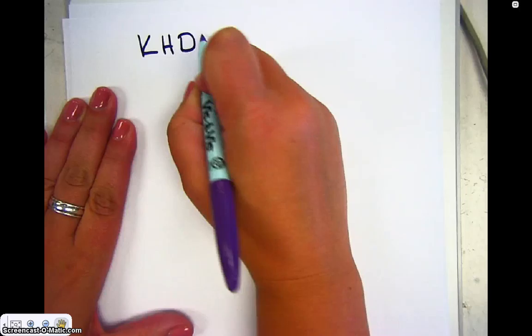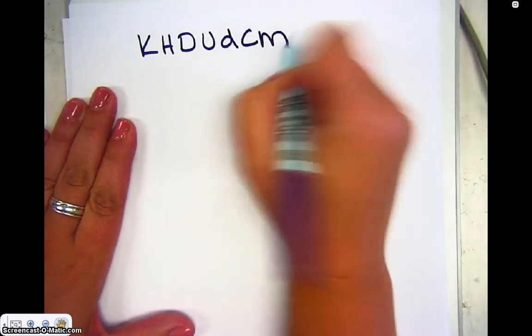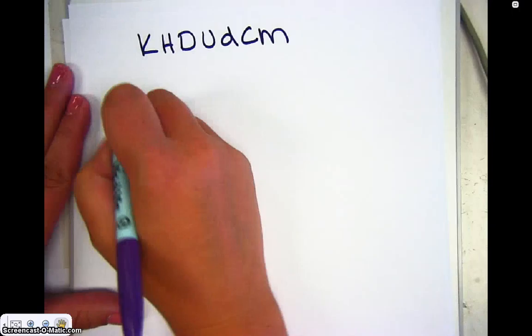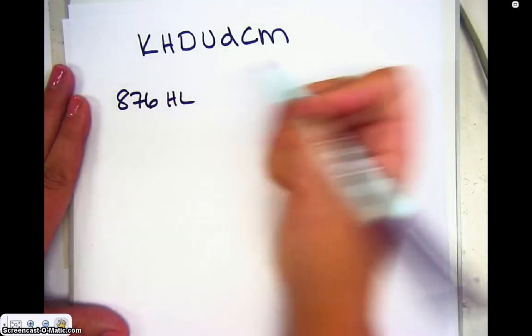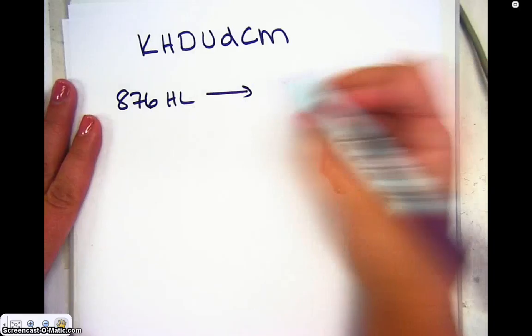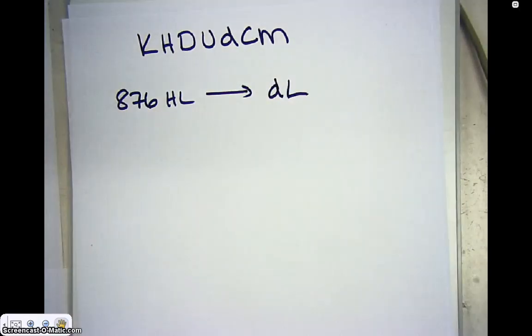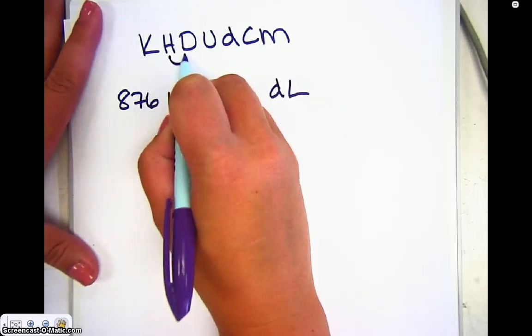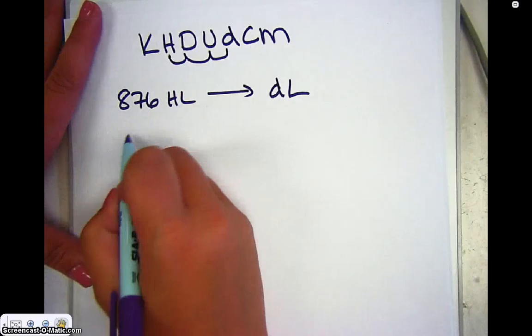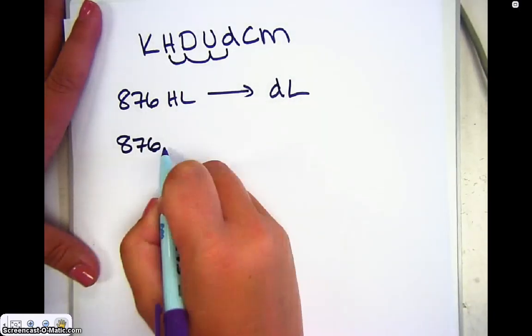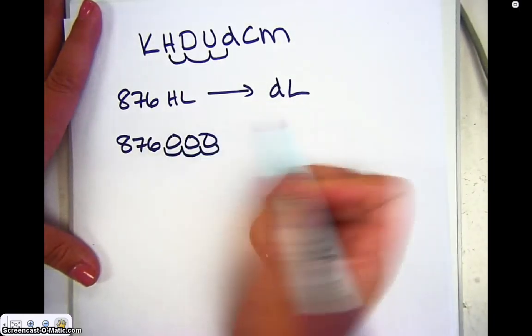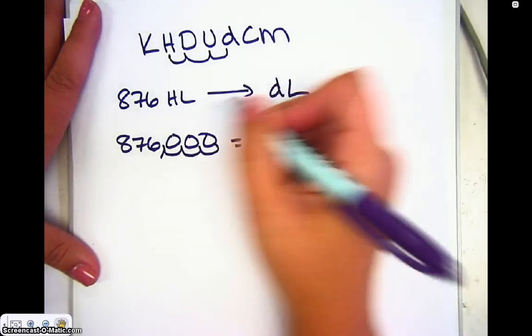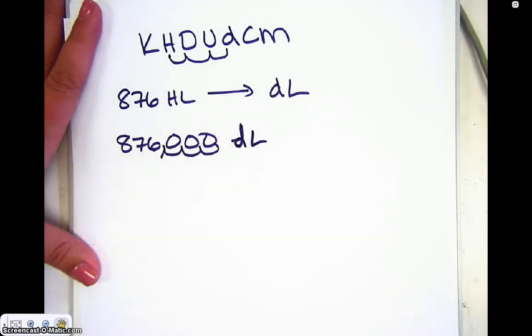So if we go ahead and look at this. Let me just write down my little thing. King Henry died unfortunately and I'm going to do a little D for DECI chocolate milk. So let's say I have like eight hundred and seventy-six hectoliters. And I want to convert that to deciliters. So what I would do is I go up here and I would say, okay, I'm starting at the H and I'm going to move my decimal place one, two, three places to the right. So I take 876 and I go one, two, three places to the right. Fill it in with zeros. And that would give me 876,000 deciliters.